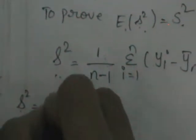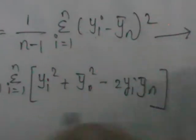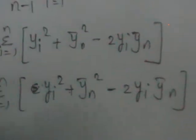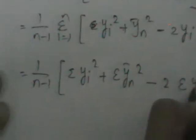s² equals 1 by n minus 1, sigma i equals 1 to n, (a minus b)² which is a² plus b² minus 2ab. This gives 1 by n minus 1, sigma i equals 1 to n, [y_i² plus ȳ_n² minus 2 y_i ȳ_n]. Now let us apply the summation to each term.